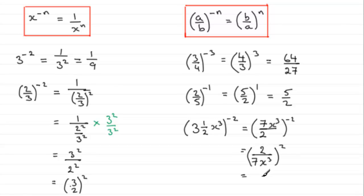And if we square the 2, 2 times 2 is 4. And if we square 7x cubed, we've got 7 times 7 is 49. And if we do x cubed times x cubed, it's going to be x to the power 6. So we get 4 over 49x to the power 6.